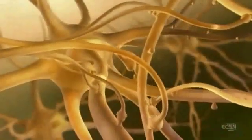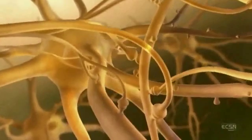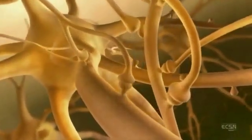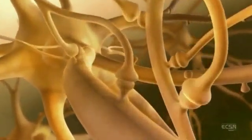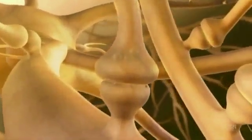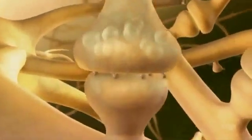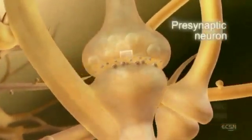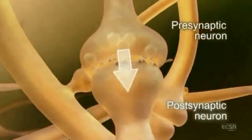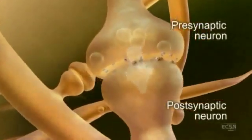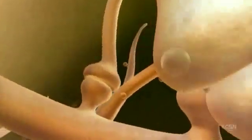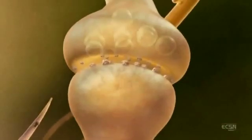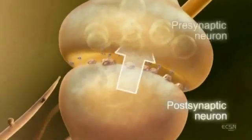Within the brain, CB1 receptors are among the most abundant G-protein-coupled receptors. However, in contrast to classical signaling, where information travels from pre- to post-synaptic neurons, the ECS uses retrograde signaling — the information travels from post- to pre-synaptic neuron.